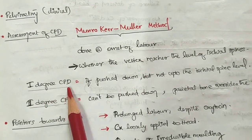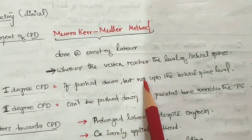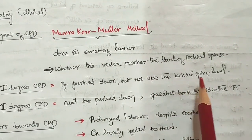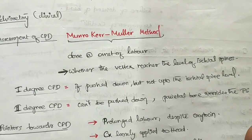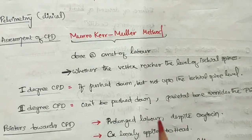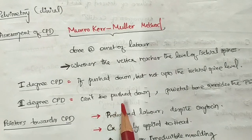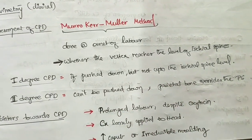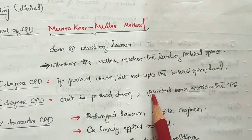From this maneuver, we classify CPD into first degree and second degree. In first degree CPD, when the head is pushed down it does not reach the level of the ischial spine. In second degree CPD, the head cannot be pushed down at all.